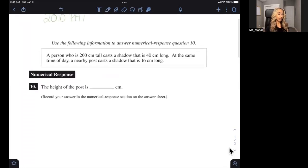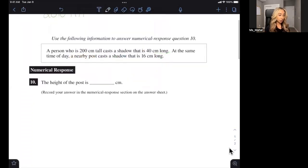A person who is 200 centimeters tall casts a shadow that is 40 centimeters long. At the same time, a nearby post casts a shadow that is 16 centimeters long. So these questions can be tricky, but what I first suggest that you do is to actually draw a diagram. So let's draw the diagram.